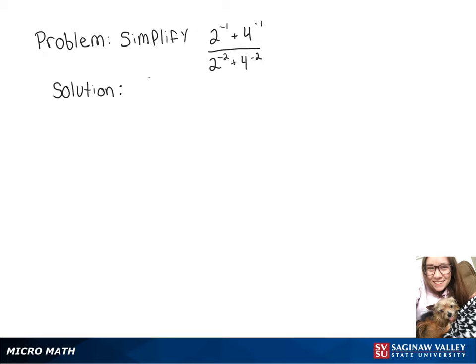To simplify this expression with our negative exponents, our 2 to the negative 1 will turn into 1 over 2. 4 to the negative 1 turns into 1 over 4.